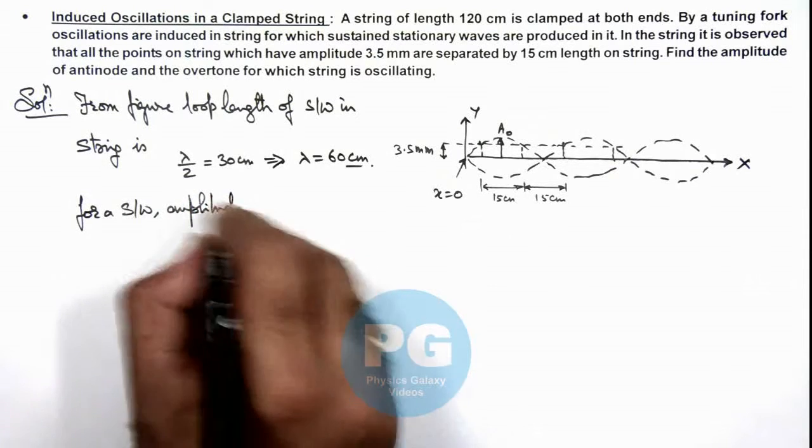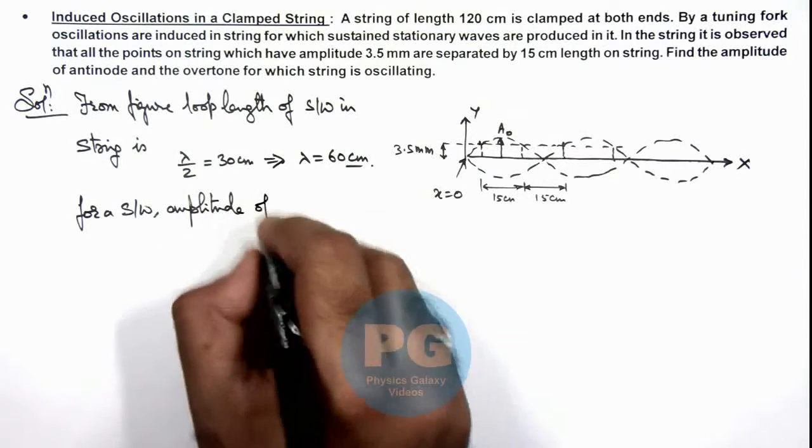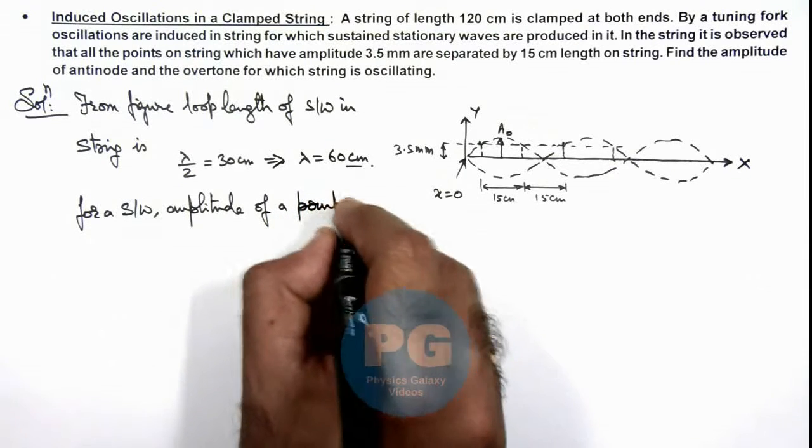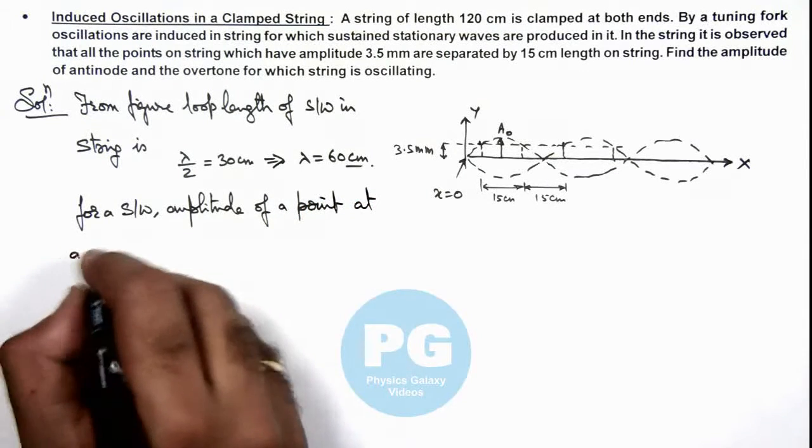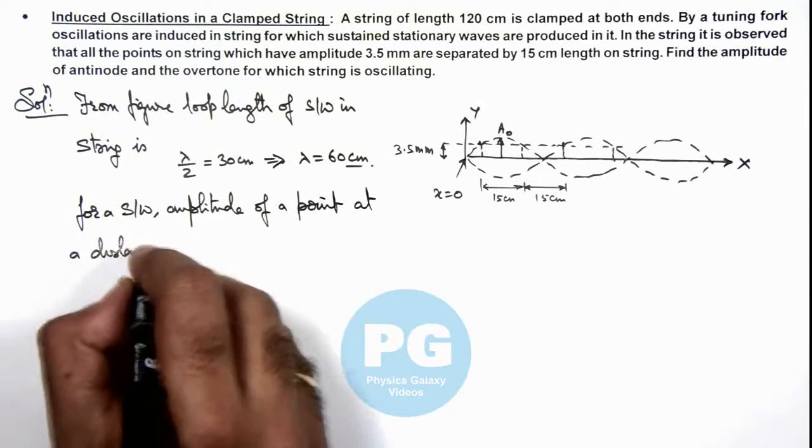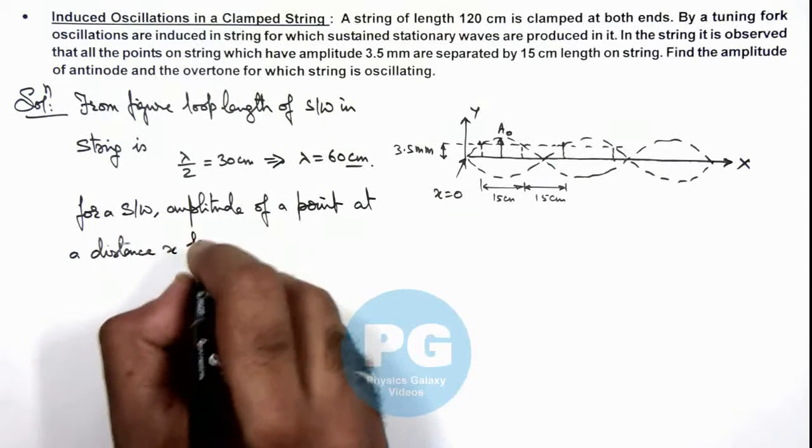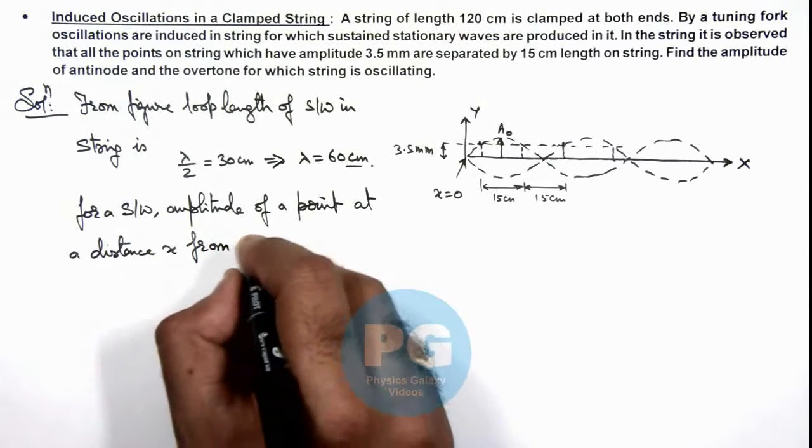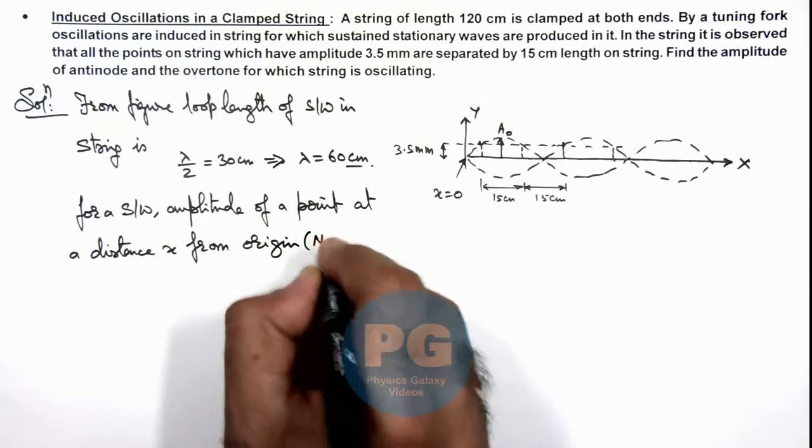Amplitude of a point at a distance x from origin, which is taken as a node.